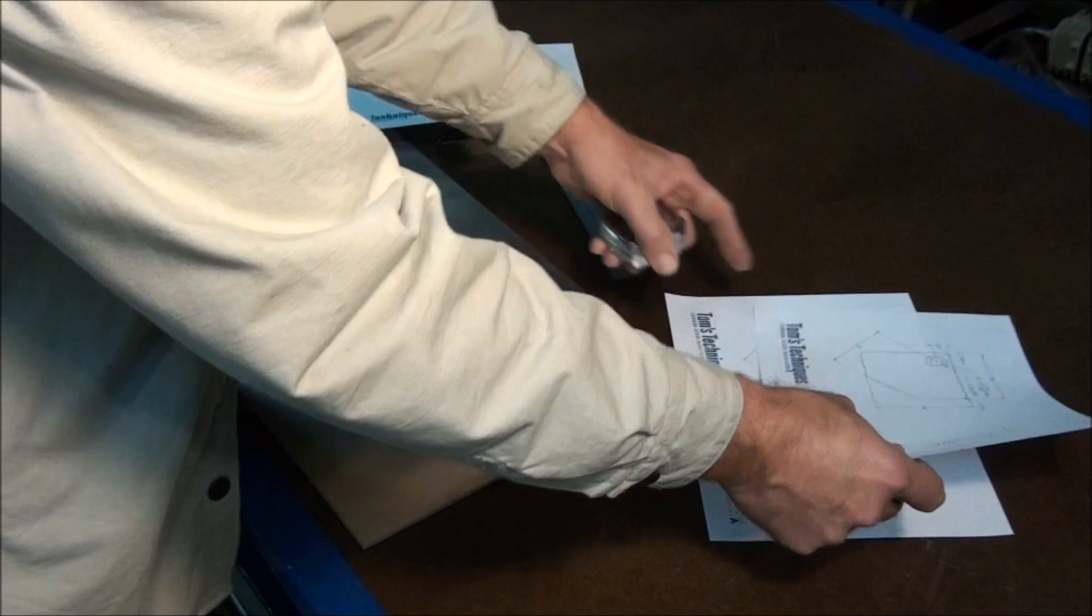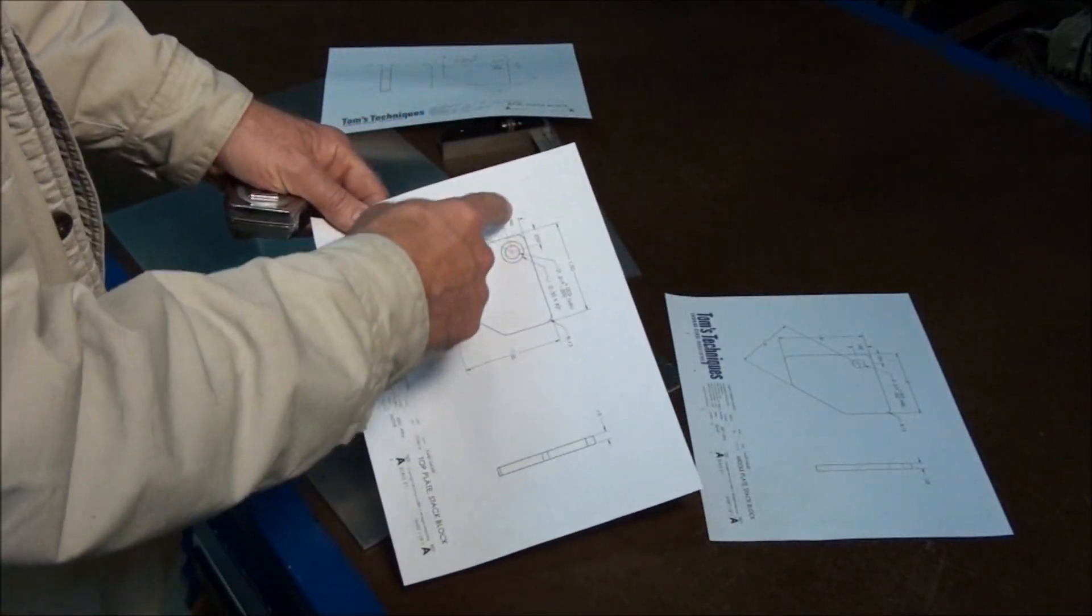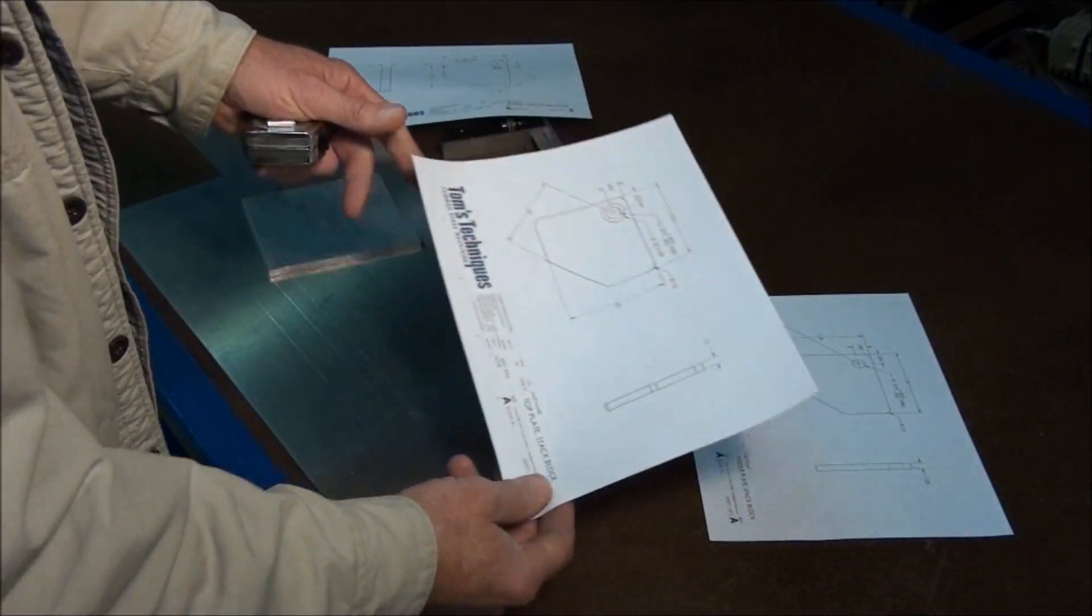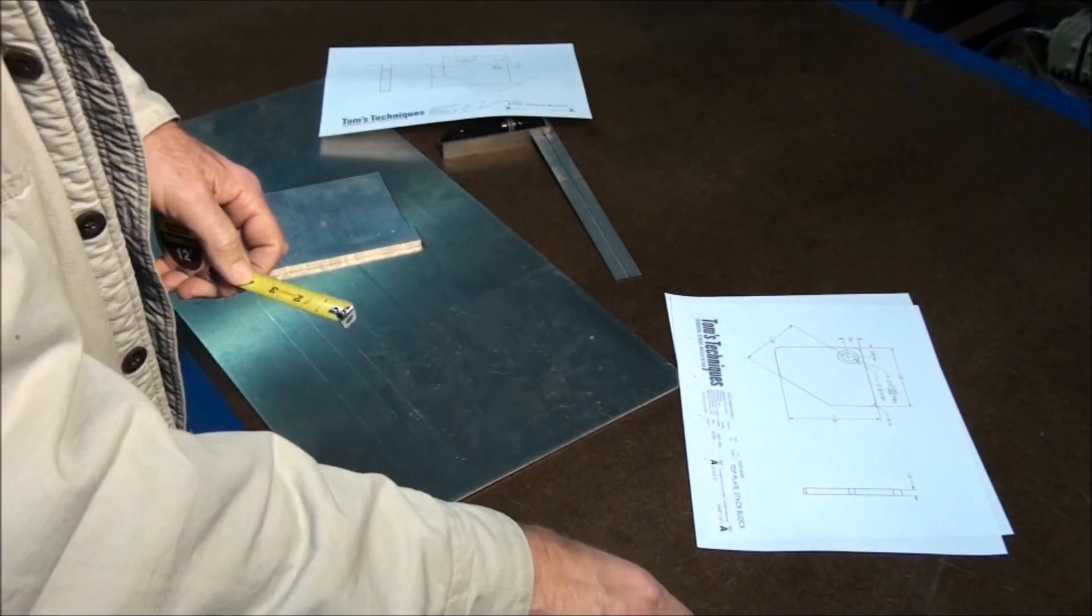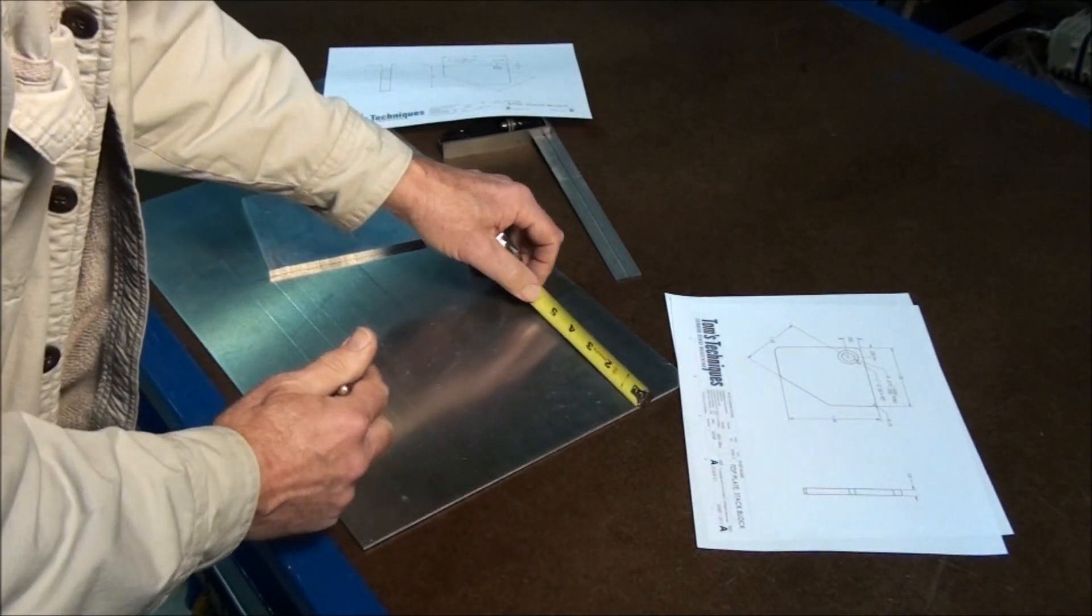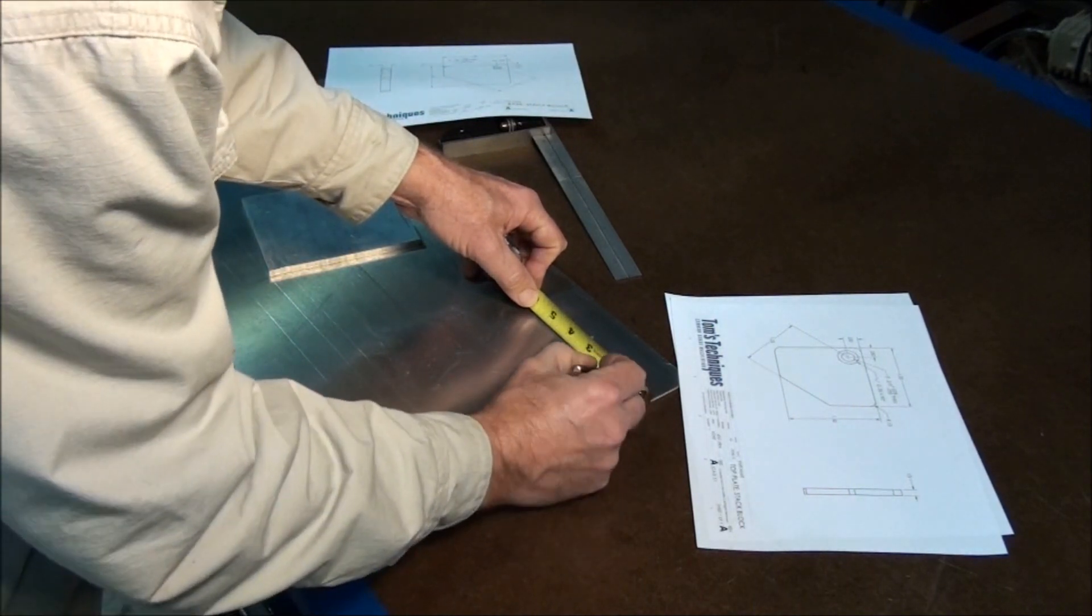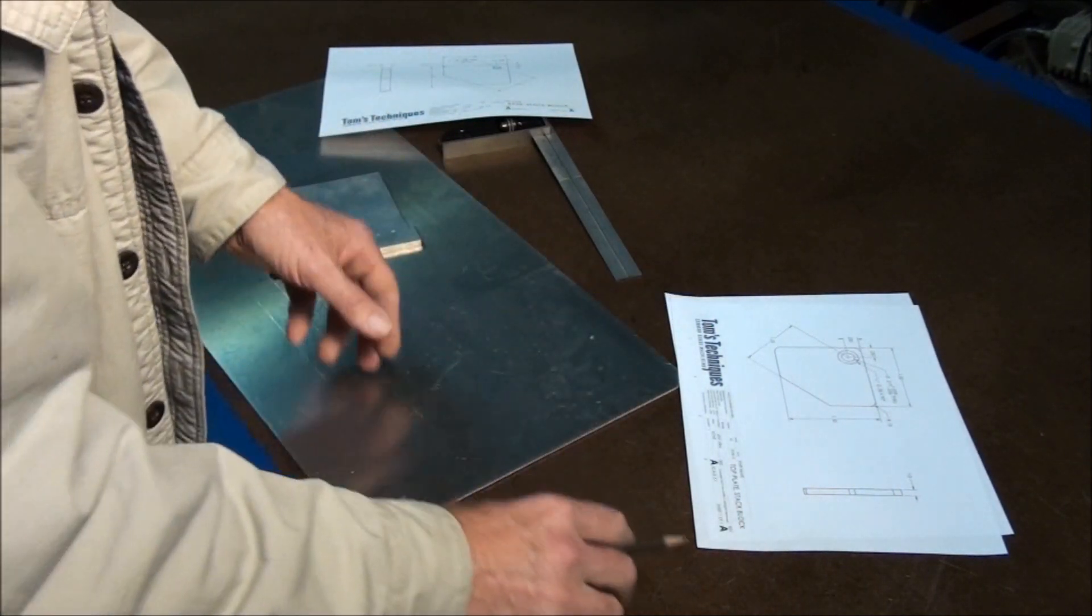First thing we need to do is figure out how wide to saw out the stock. The overall dimensions are 1½ by 1½. For something like this, I like to add about ⅛ inch to it to leave enough stock for machining. So let's saw them out at 1⅝ inch square.